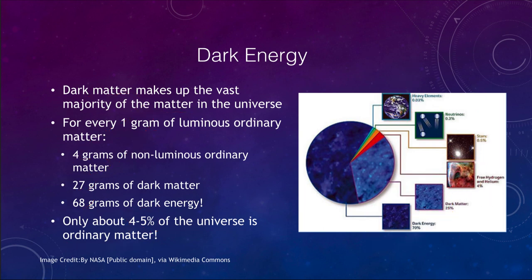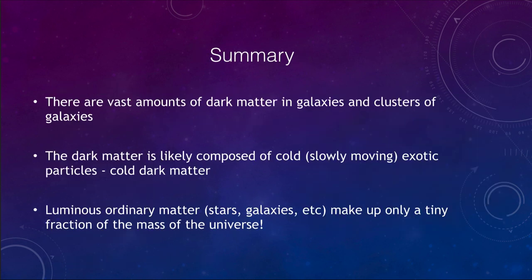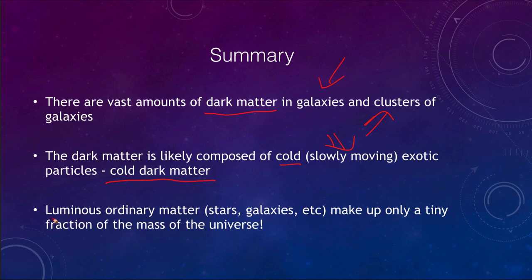In summary, we know that there are vast amounts of dark matter in galaxies and in clusters of galaxies. Dark matter is likely composed of cold — meaning slowly moving — exotic particles, what we call cold dark matter. Luminous ordinary matter such as stars, galaxies, and planets makes up only a tiny fraction of the mass of the universe. That concludes our lecture on dark matter — we'll be back next time for another topic in astronomy, so until then have a great day everyone.